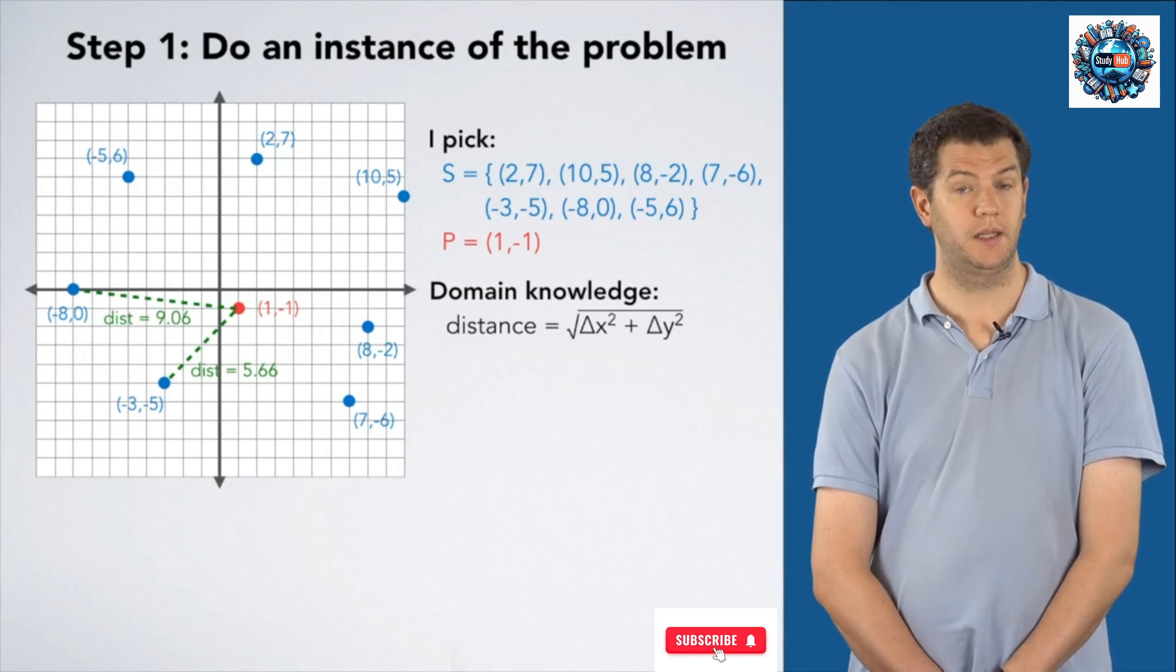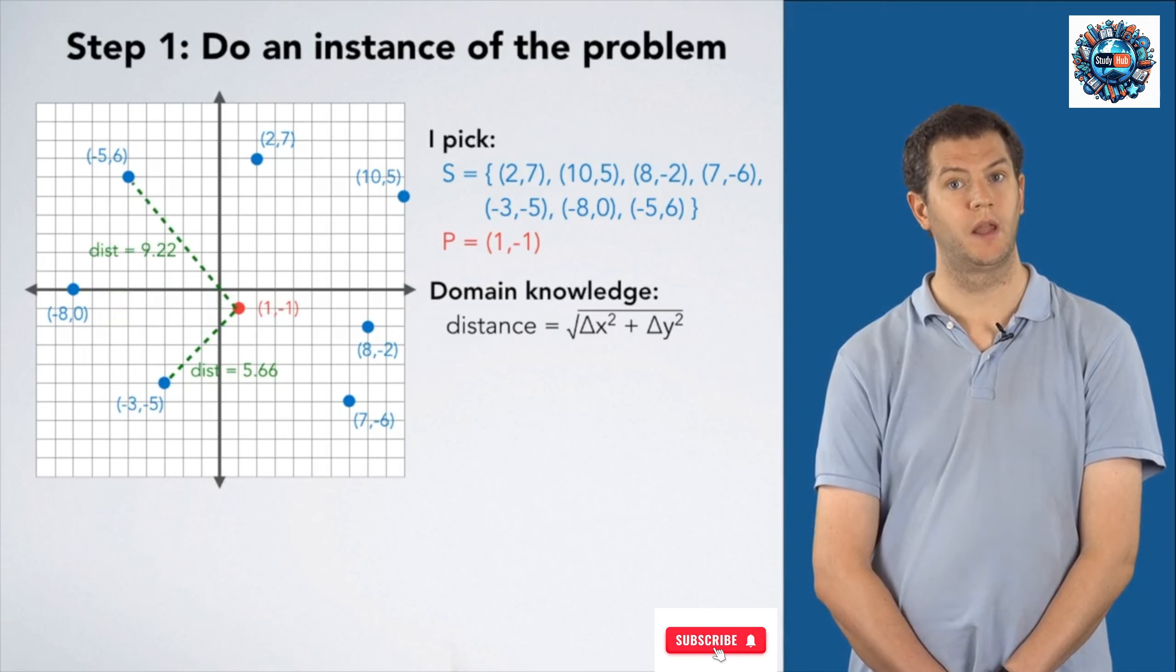This point is 9.06 away, so (-3,-5) is closer. This point is 9.22 away, so (-3,-5) is still closer.